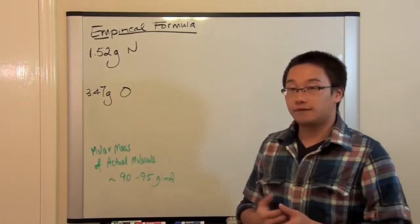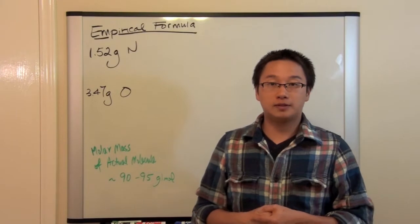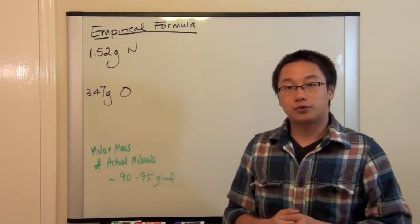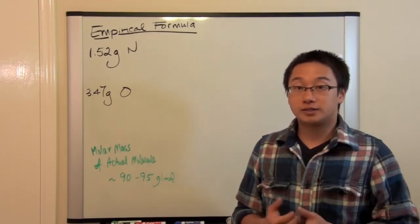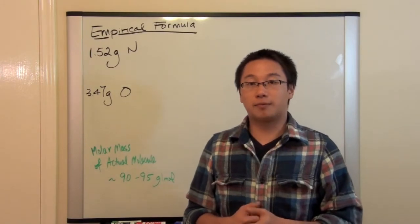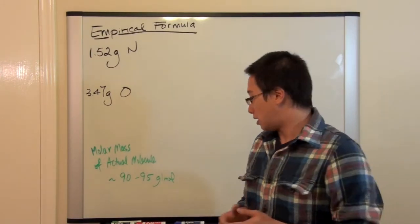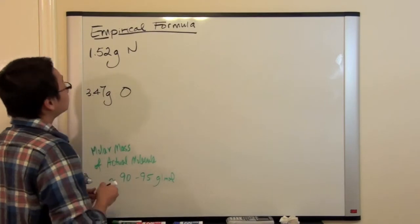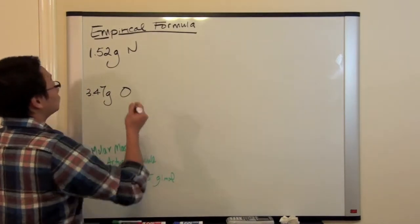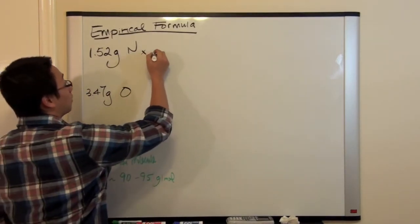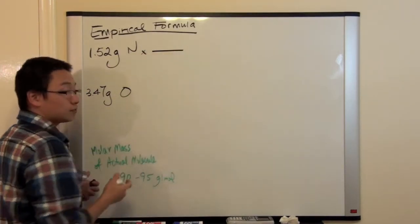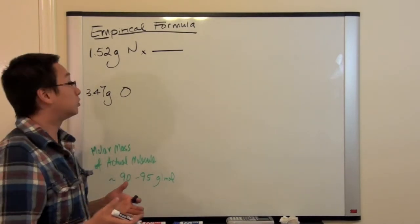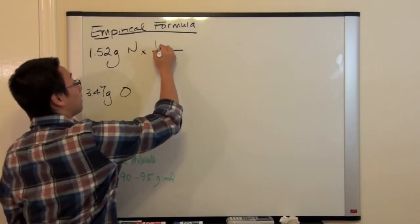We have two pieces of information: the masses of two elements, nitrogen and oxygen. Let me go through this quickly since we solved a similar problem in the previous tutorial. First, we are going to convert the mass to quantity in terms of moles using the molar mass.